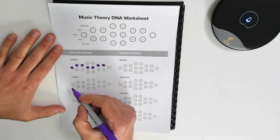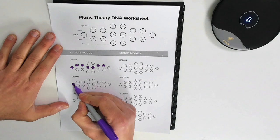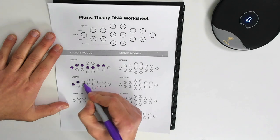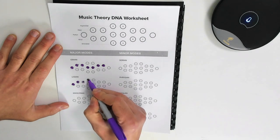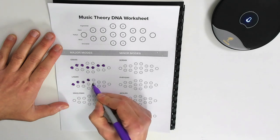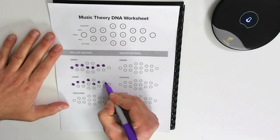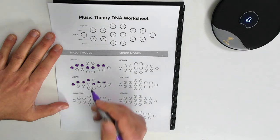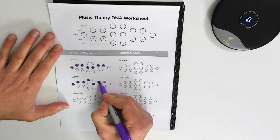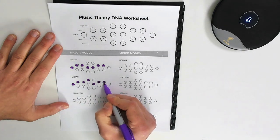The Lydian is very similar. It also has a one, major second, major third, augmented fourth. Ah, that's different. Perfect fifth, major sixth, major seventh. Okay, that's the path that you would take for this scale that is called Lydian.